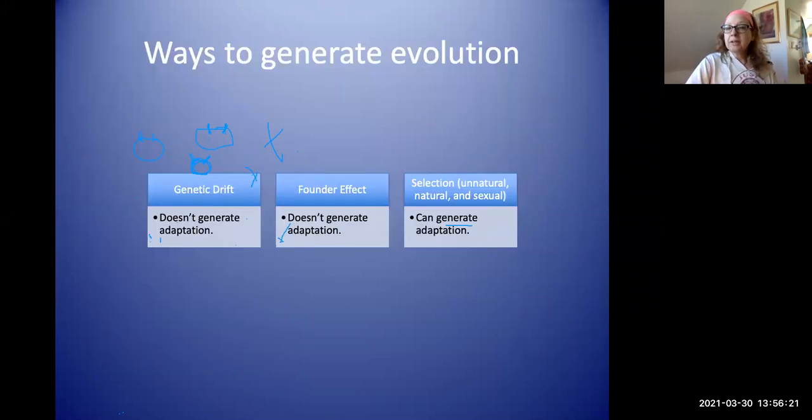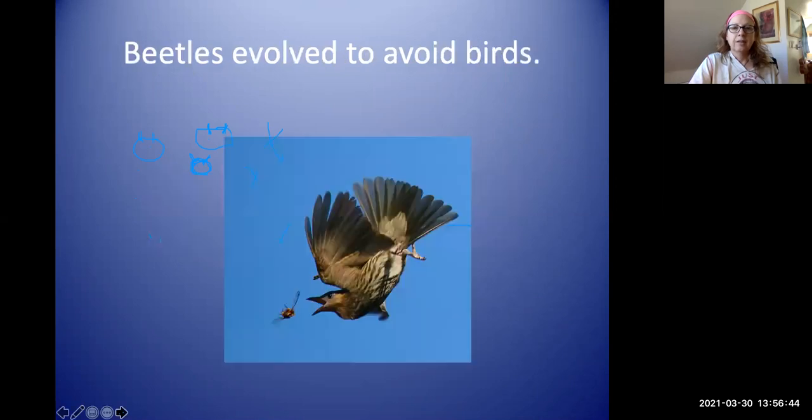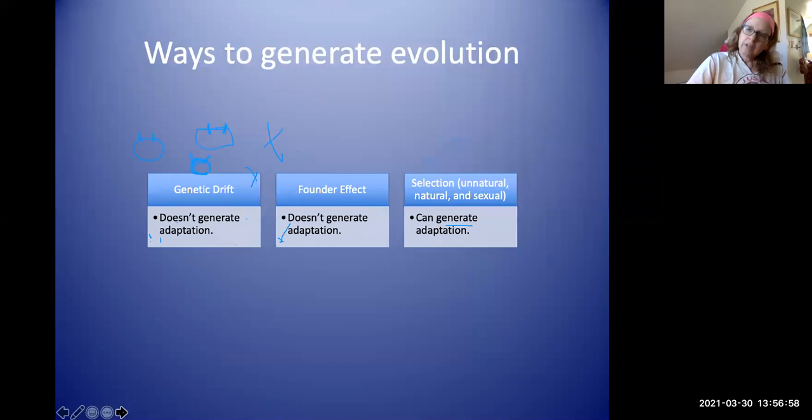So we have three really common ways to generate evolution. We have three common ways to generate changes in gene frequency over time. We've got genetic drift, which is random. We've got the founder effect, which is random. And we've got natural selection or unnatural selection or sexual selection, one flavor of selection, and that can generate adaptations. I just wanted to give you this example, an actual photo. Beetles have evolved to avoid birds. It's not just made up. It's not a crow, but nonetheless. The last thing that I want to say here is that evolution equals selection, right? Evolution also equals the founder effect. Evolution also equals genetic drift. But selection does not equal evolution. So natural selection is one form of evolution. That's the take-home message that I want you to understand. Natural selection is one of three kinds of evolution.